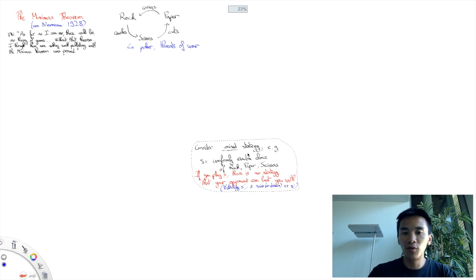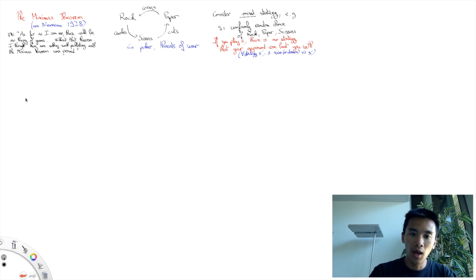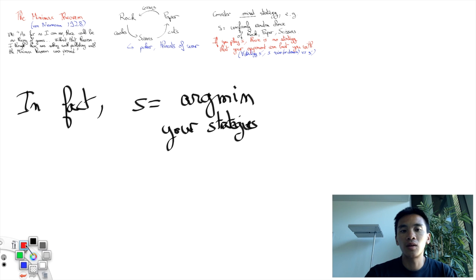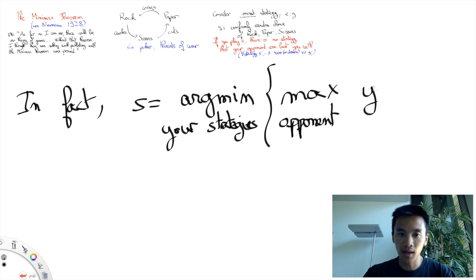he proved that uniformly random choice here was a strategy that minimized our losses when playing against an all-knowing opponent that wants to maximize these losses. Hence the terminology Minimax.